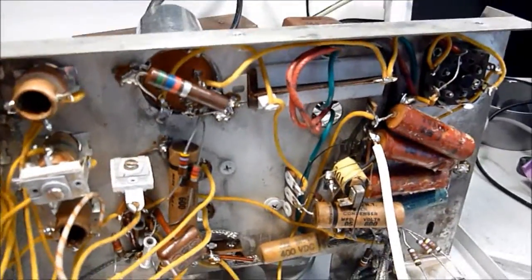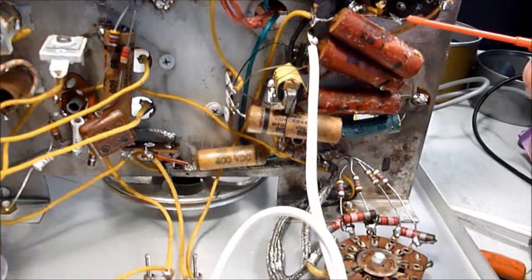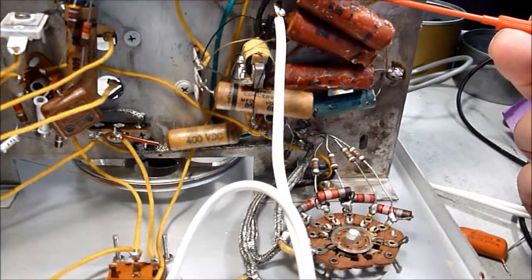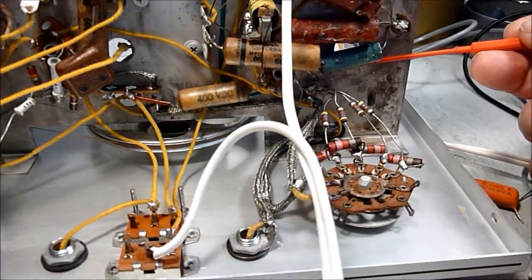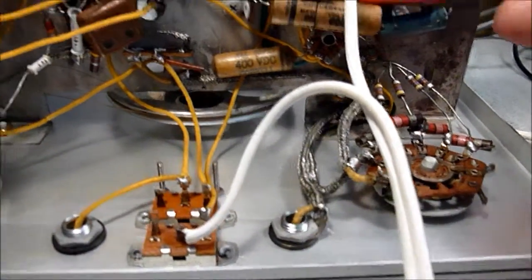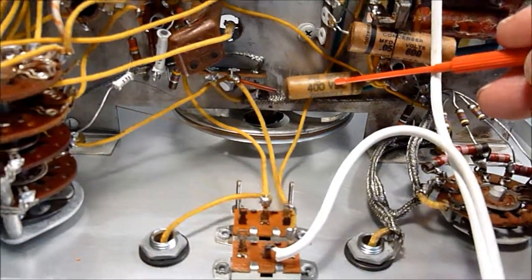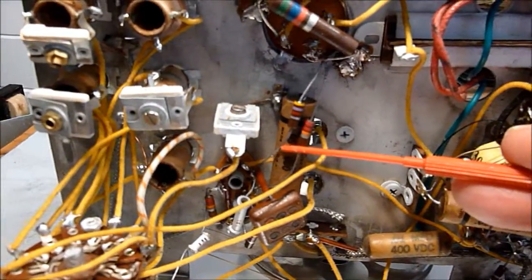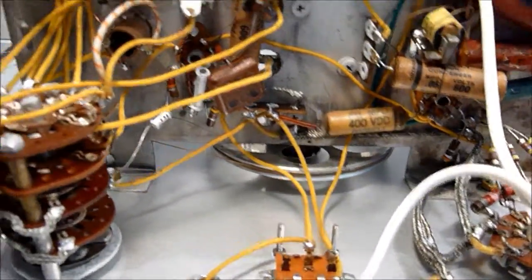Big resistor there, probably a two watt, I'll bet you that'll have to be replaced. And a number of electrolytics will probably have to be replaced. All of these are 0.1 at 400 volt, this is a 0.025 at 200 volt, this is a 0.05 at 600 volt, a 0.01 at 400 volt, and a 0.05 at 600 volt, so they'll all probably have to be replaced.